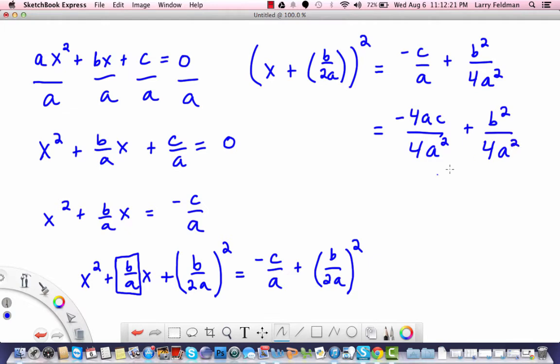Doing that gives us the common denominator so that we can add those fractions. So we have negative 4ac plus b squared over 4a squared.